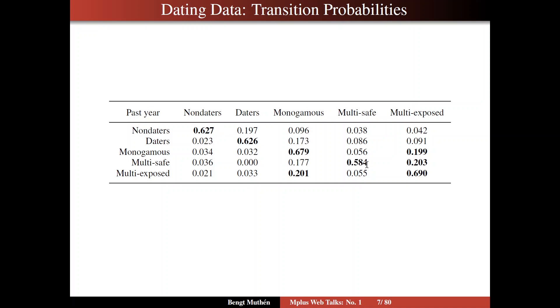Multi-partners safe have a little bit lower probability of staying there and some non-ignorable probability of transitioning to the multi-partner exposed, the risky class. For multi-partner exposed, high probability of staying in that same class, but a certain probability of going back to a monogamous relationship. So that gives you an idea about the central parts of the LTA model.